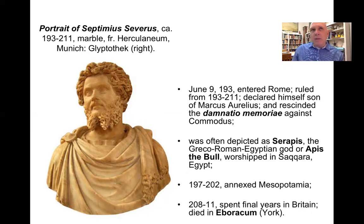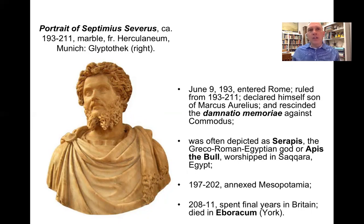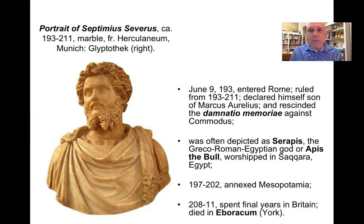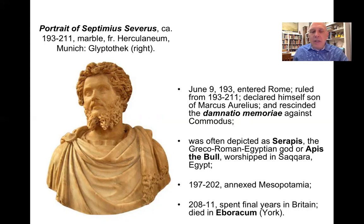It seems that by lifting the damnatio memoriae, Severus was ingratiating himself with the Antonine dynasty. As a North African, he brought an African religion to his court — he worshipped the Greco-Roman Egyptian god Serapis, and also Apis the Bull, worshipped in the great necropolis at Saqqara, Egypt. Between 192 and 202 he worked to re-annex Mesopotamia into the Roman fold, and he finished out his years in Britain, dying in Eboracum — the modern city of York.